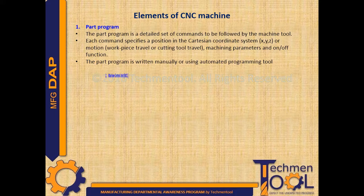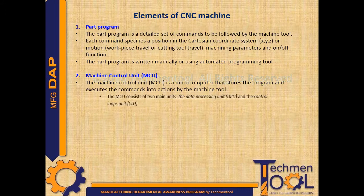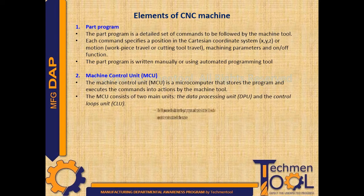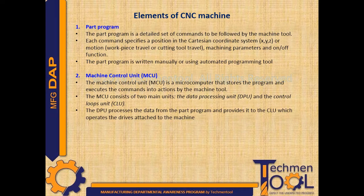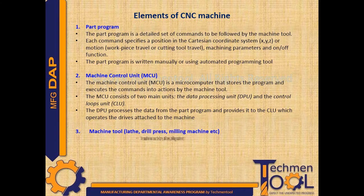The part program is written manually or using an automated programming tool. The machine control unit is a microcomputer that stores the program and executes the commands into actions by the machine tool. The machine control unit consists of two main units: data processing unit and control loops unit. The data processing unit processes the data from the part program and provides it to the control loop unit, which operates the drives attached to the machine.